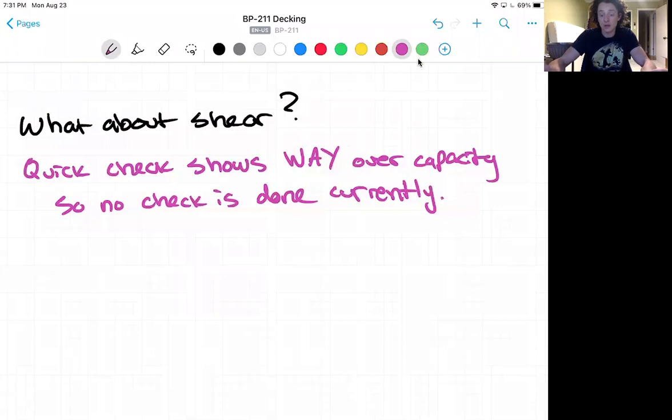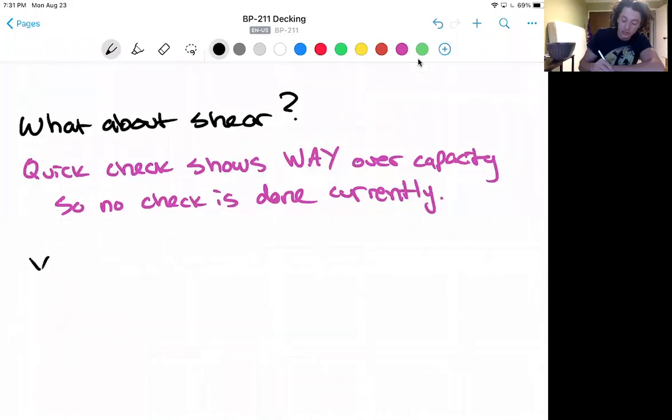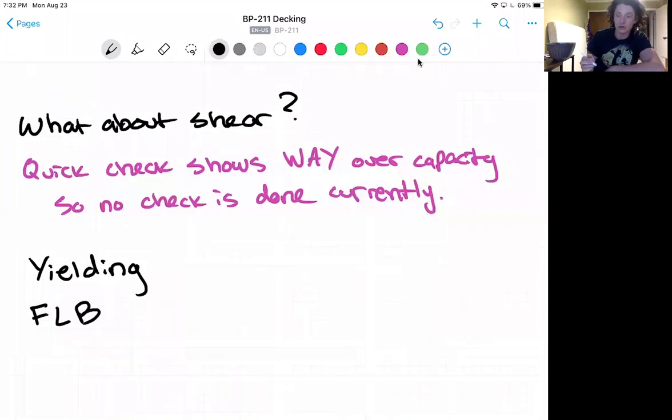And you may be thinking as well what about the other checks if you have experience with steel design? There's also other than what we just checked which is yielding, the actual yield of the material. There is flange local buckling and lateral torsional buckling.